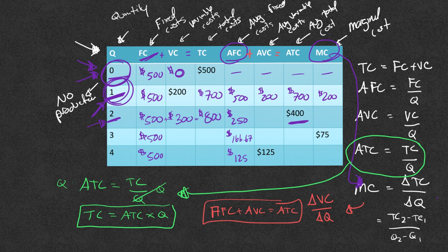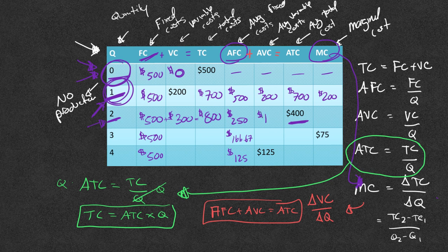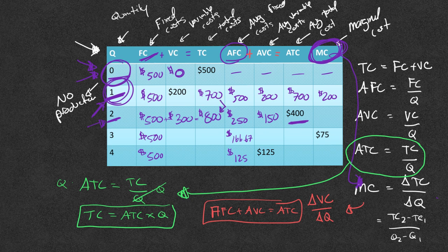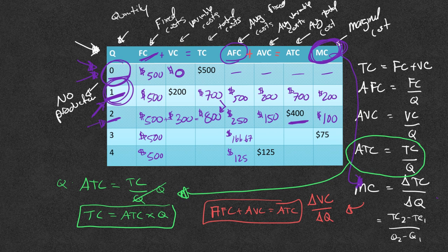Now the average variable cost, we just have to divide that variable cost of 300 by two and we get 150. And we move back down here to the last column of marginal cost. How much is that changing? That total cost went from 700 to 800. So that means it increased by 100. And we have now filled out our third column when quantity is equal to two.